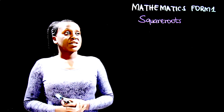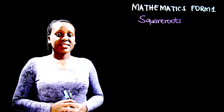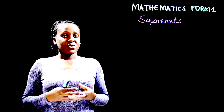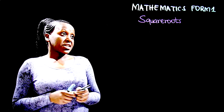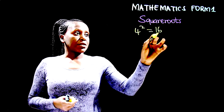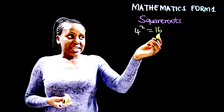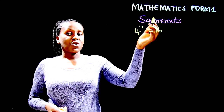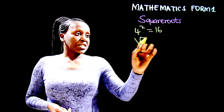Hello learners, welcome to this lesson. I'm Teacher Agnes and today we are going to be discussing square roots. Square roots are opposites of squares — one is a reverse of the other. For example, the square of 4 is equal to 16, so 4 squared equals 16. This means that 4 is the square root of 16, and the square root sign is represented like this.